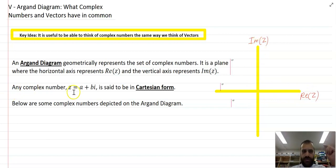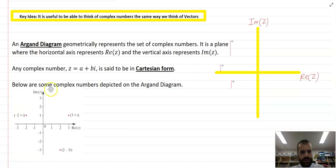Now any complex number z equals a plus bi is said to be in Cartesian form. Below are some complex numbers depicted on the Argand diagram. Let's look at them. Here's our Argand diagram. The real number three plus i is here, so three across and one i up, or just one up for the imaginary component.